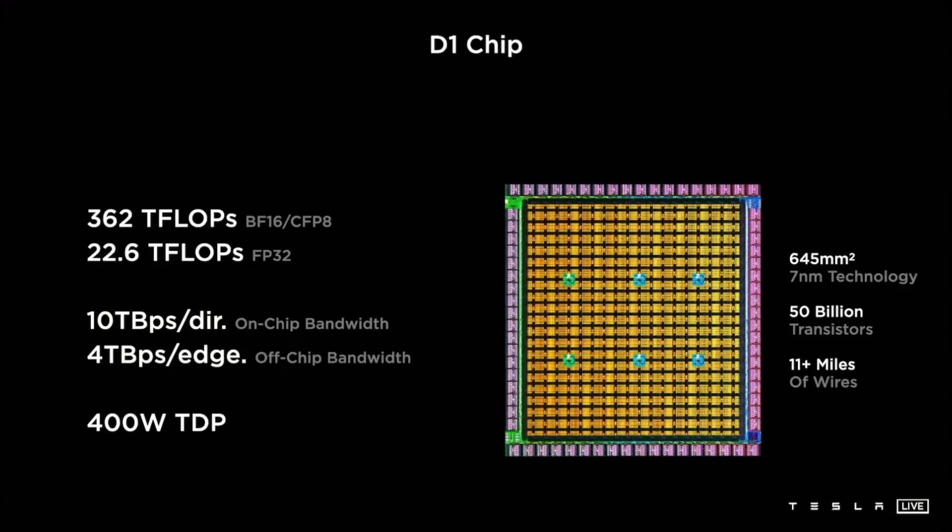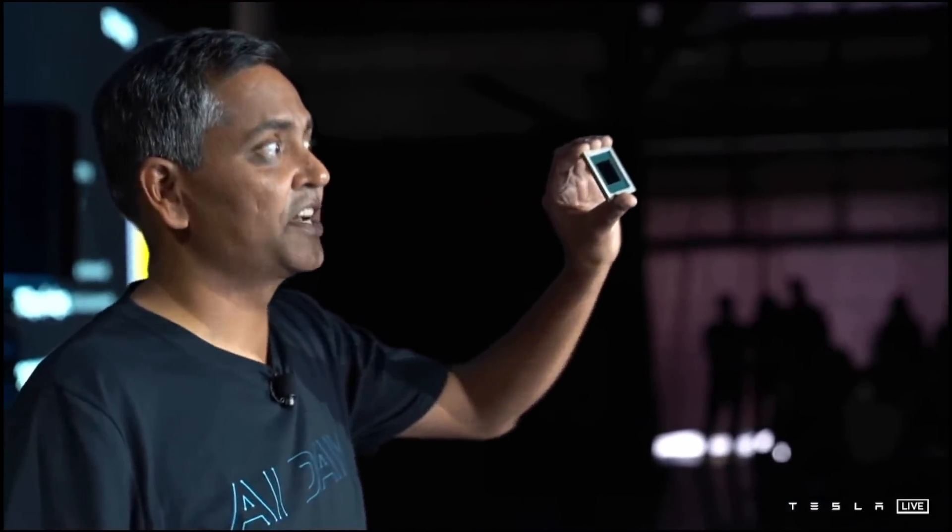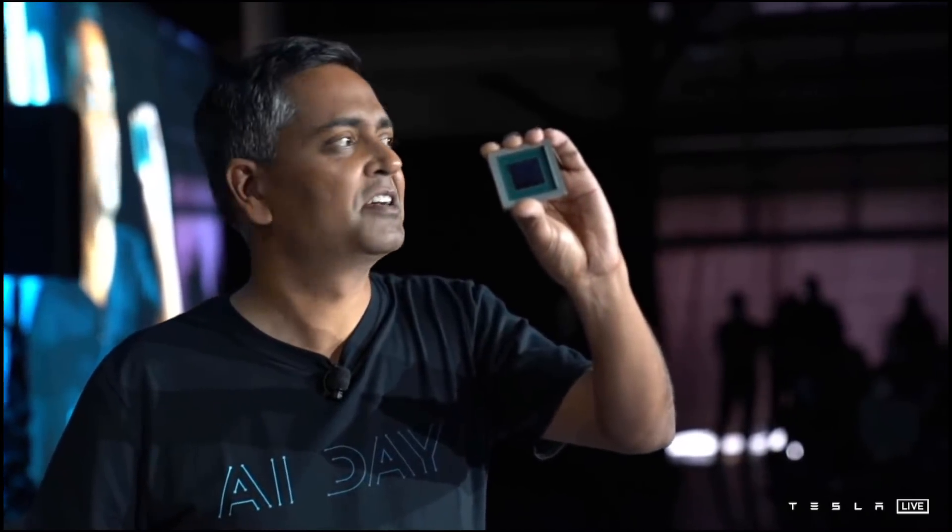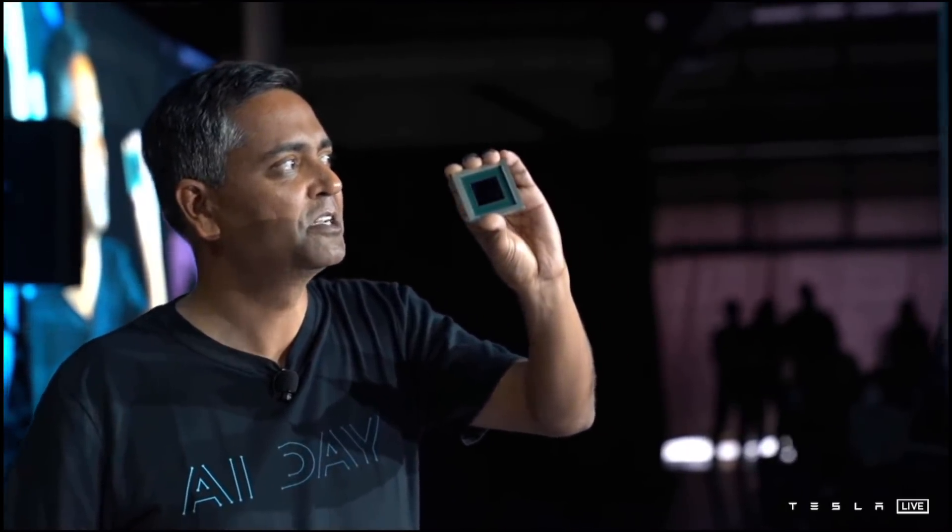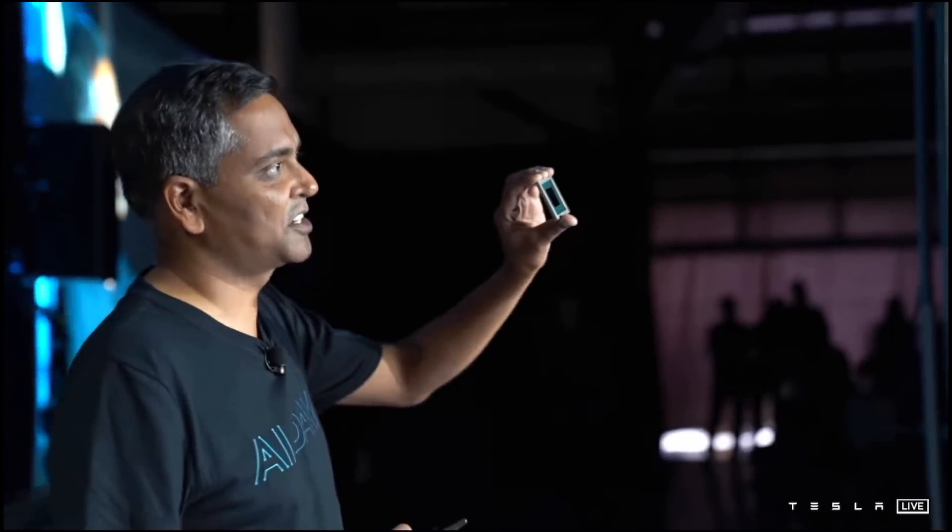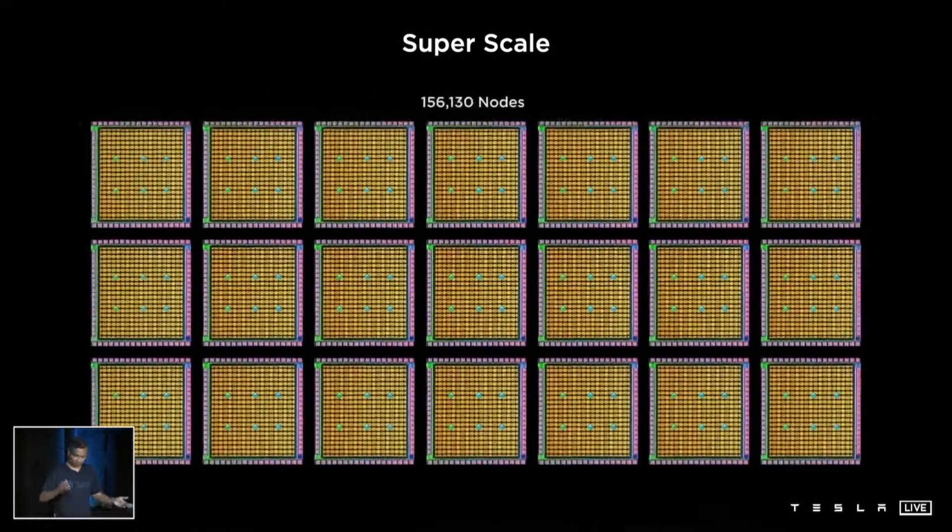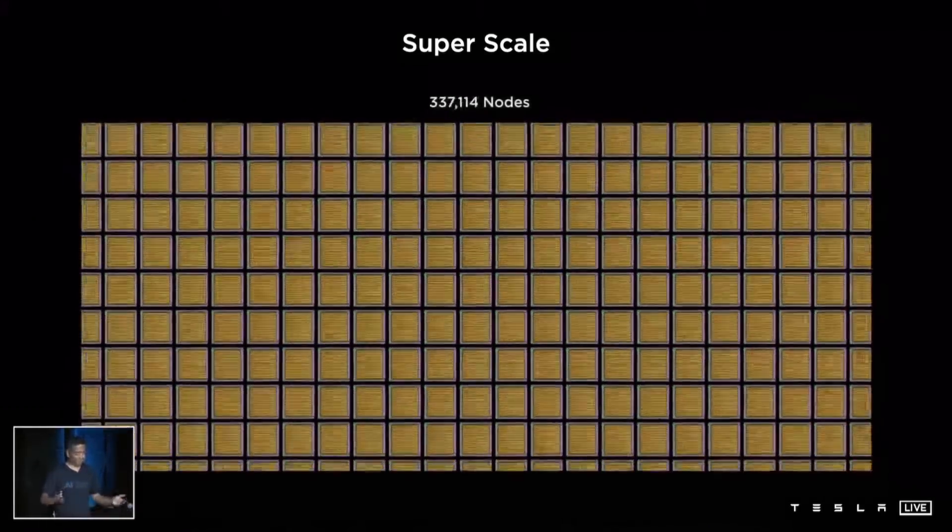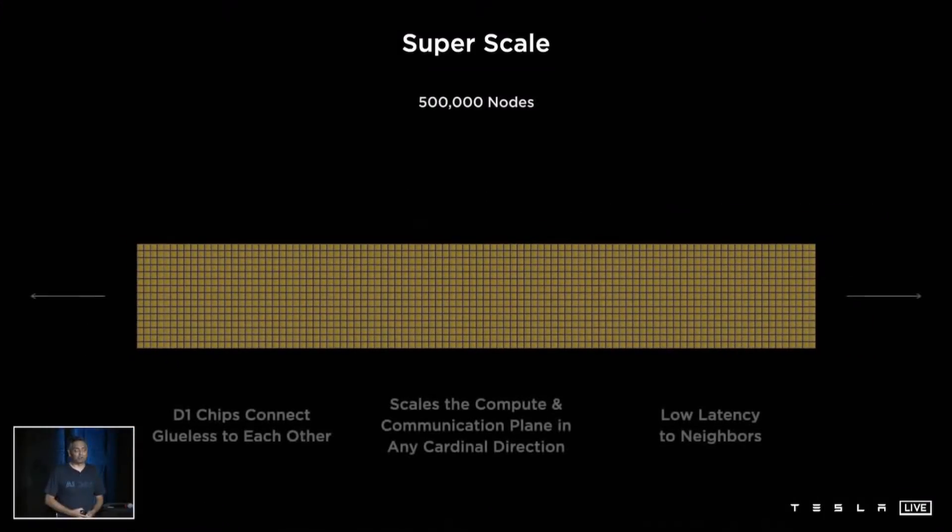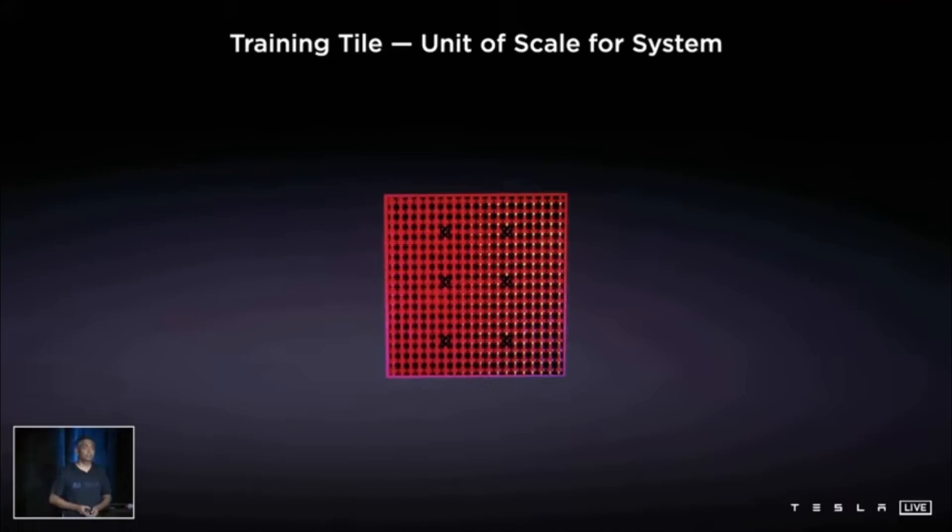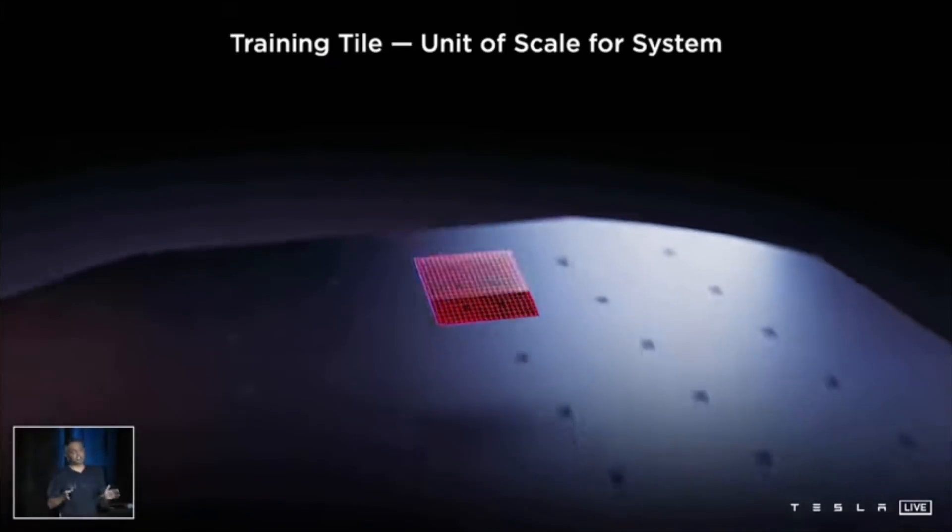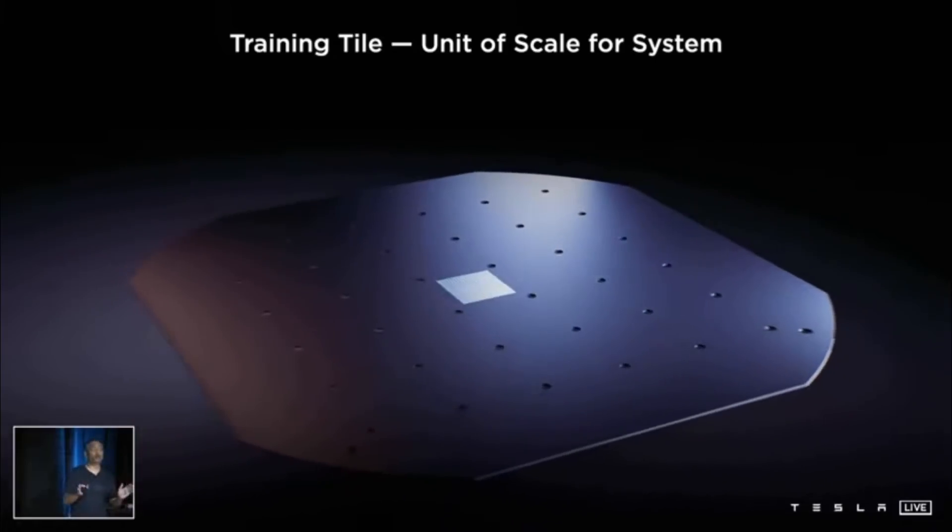And this D1 chip, as it's called, is entirely designed by Tesla's AI team. Yes, Tesla has an AI software and hardware team like no other on the planet. And they put together 500,000 of these D1 chips to make the Dojo computer's training tiles. Yes, it's all about scale. They made a system that can easily be scaled up in the future.